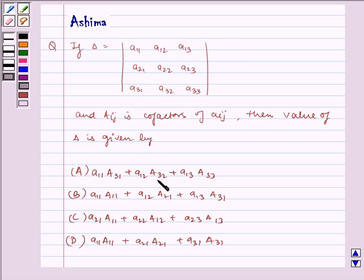Option A: a11 A31 plus a12 A32 plus a13 A33. Option B: a11 A11 plus a12 A21 plus a13 A31. Option C: a21 A11 plus a22 A12 plus a23 A13.